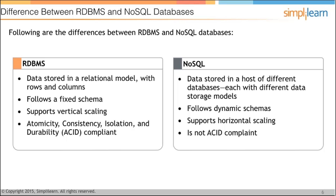C stands for Consistency — the data should be consistent across all nodes. If one system shows a balance of 4000, the same balance should be reflected across all systems; they should not show different data. I stands for Isolation — if two transactions are happening simultaneously, they should happen in a manner such that they do not know about each other. Each transaction should happen in full isolation.